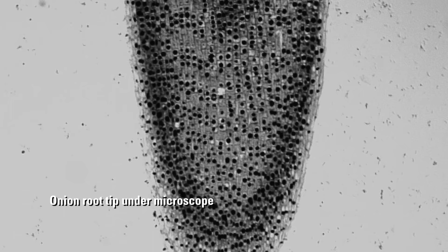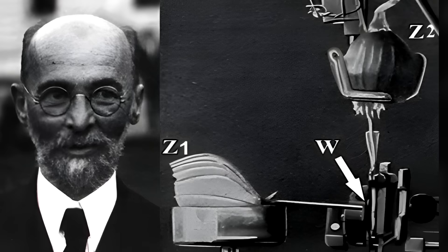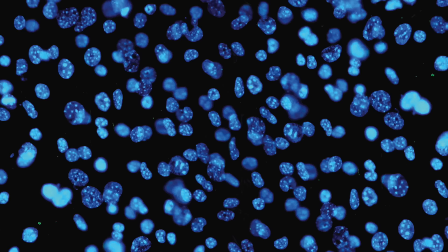He pointed the tip of one root at the middle section of a second root. The cells in that middle section of the second root then started to divide much faster. He further experimented with blocking the effect, and found that if he put a barrier between the two, he could stop the effect if the barrier blocked ultraviolet wavelengths of light.